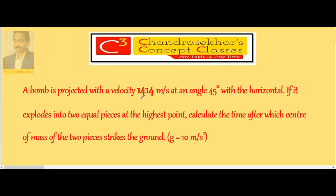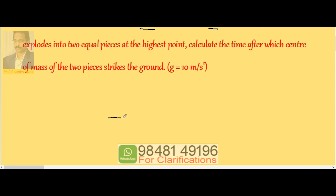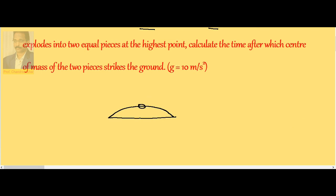Here, the bomb is projected with 1414 at 45 degrees and explosion takes place exactly at the highest point. So here the explosion is taking place. Because of this explosion, the produced two pieces may fall or may move with different velocities or same velocity depending on their masses. Since the two pieces are equal, if I imagine one piece falls freely, then the other piece continues to move.